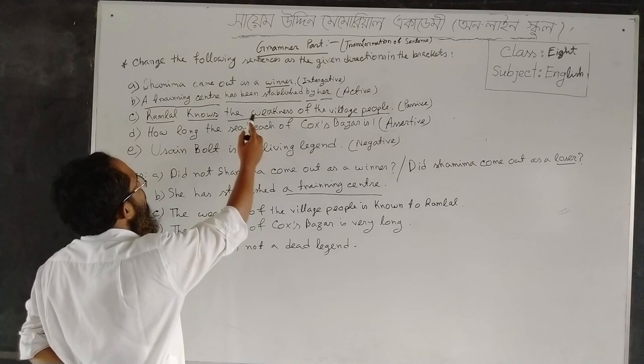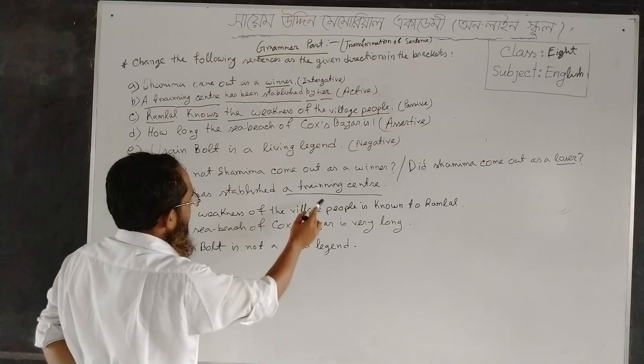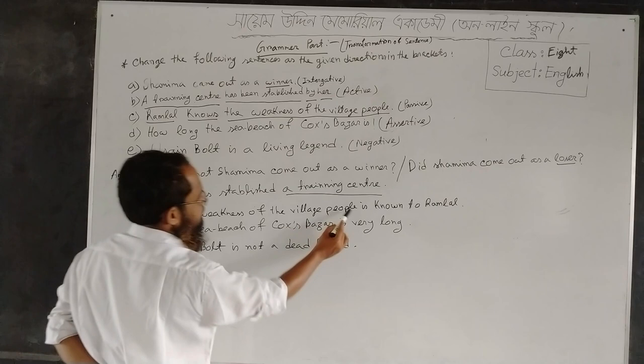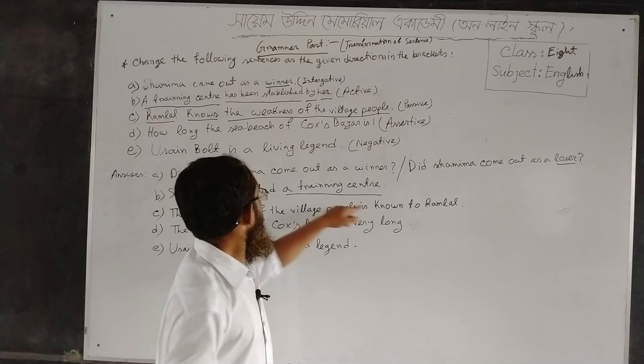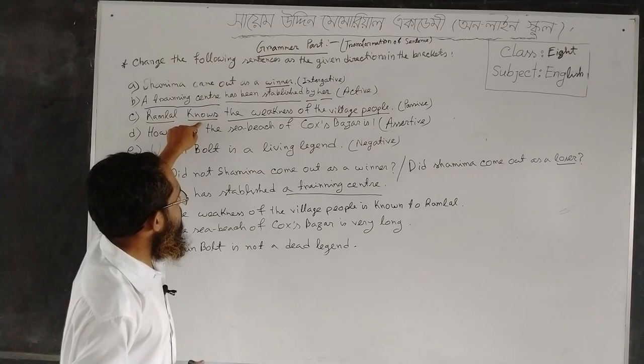According to the rules, you have to take a 'be' verb according to the subject. Here the subject is 'the weakness of the people', which indicates singular number. So you have to take the singular form of the verb: 'is'. Then the past participle form of the main verb 'know' — here 'knows' — so 'is known' is the past participle form. You have to take the preposition 'to' because the verb 'know' does not take the preposition 'by'.